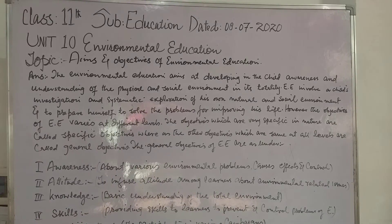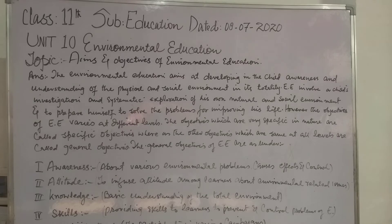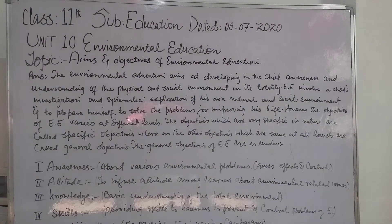Our today's topic is the aims and objectives of environmental education. Environmental education aims at developing in the child awareness and understanding of the physical and social environment in its totality. It involves the child's investigation and systematic exploration of his own natural and social environment to prepare himself to solve problems for improving his life.